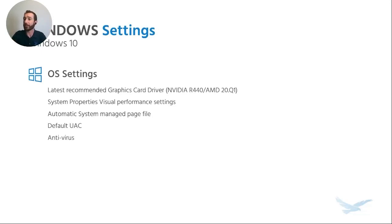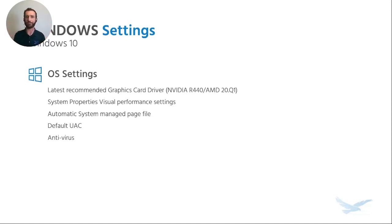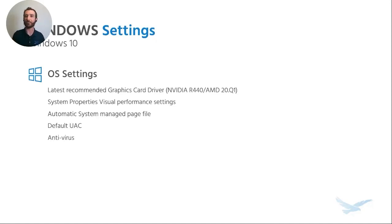At the operating system level, within system properties you can disable some of the fancier visual technologies Microsoft has pushed into later versions of Windows — transparent windows, fancy control-tab switching, and different graphical properties. You can turn a lot of those features off, which lowers the overhead on your graphics card and gives you a little more computing power. However, it will make your computer look like Windows NT. I'd generally recommend leaving it as-is unless you're running a five-year-old graphics card.